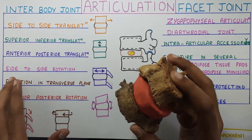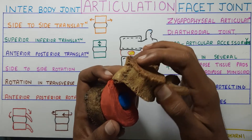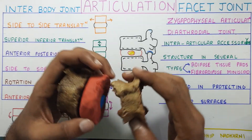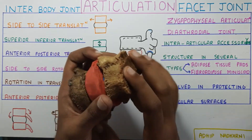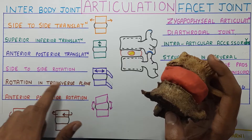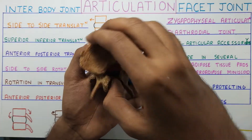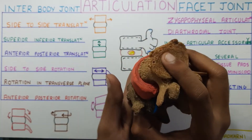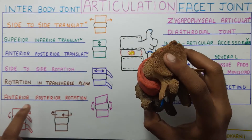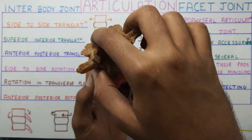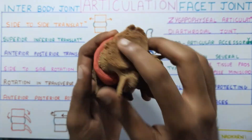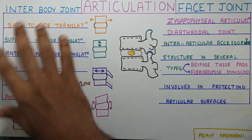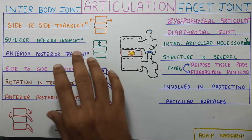The other three movements are rotational. First is side-to-side rotation — if you see from the superior view, that is basically lateral flexion. Then next is rotation in the transverse plane — this is the classical rotation we see in the spine. And finally, anterior-posterior rotation — that is tilting of the vertebra anteriorly and posteriorly, which would be flexion-extension. So with that, we finish up the movements at the interbody joint.